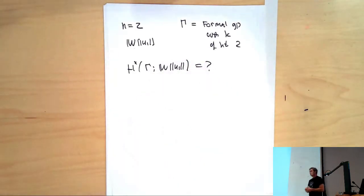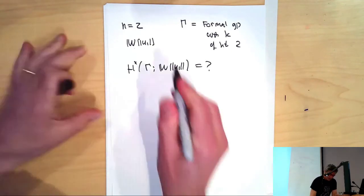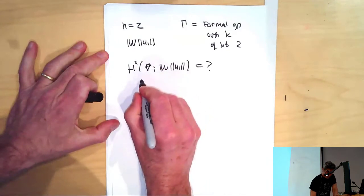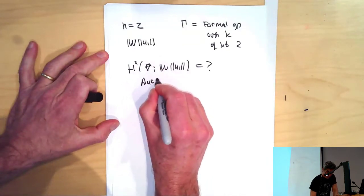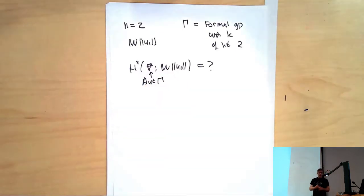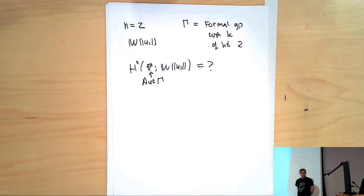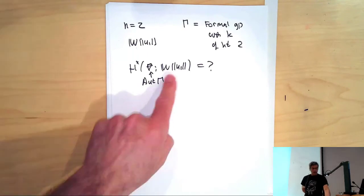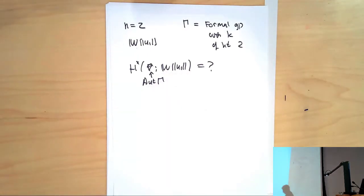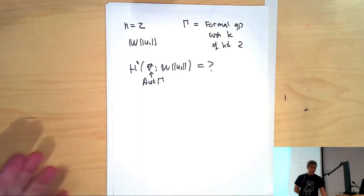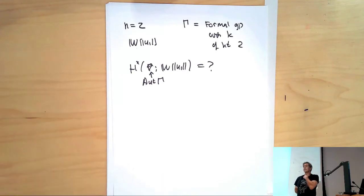Now there's some problems in doing this right away. One problem is — I meant to say Aut(gamma). What's the cohomology of Aut(gamma) with coefficients in this ring? Well, there's a problem right away. One is I don't know what Aut(gamma) is. For that matter, I don't really know what gamma is. And even if I did know what it was, I wouldn't know how it was acting on this ring. So before we can begin to attack this problem, we need to figure out what Aut(gamma) is and how it acts on this ring.